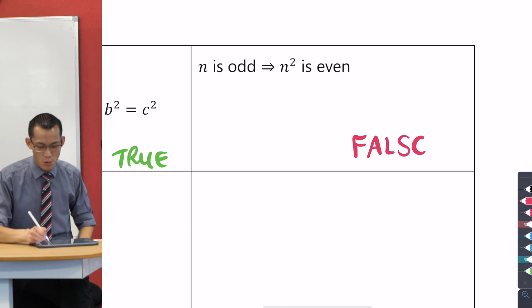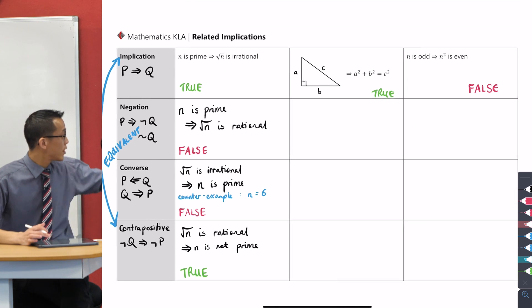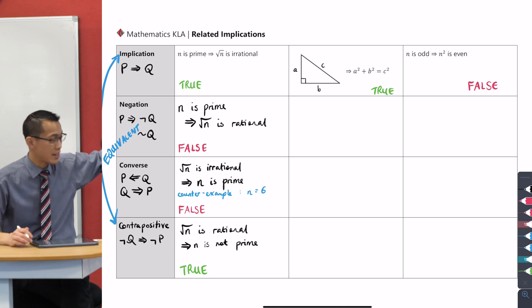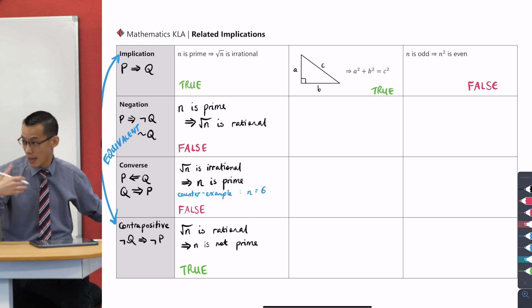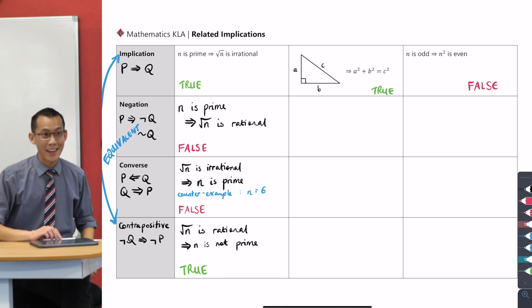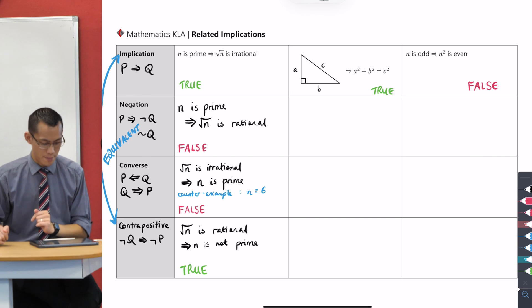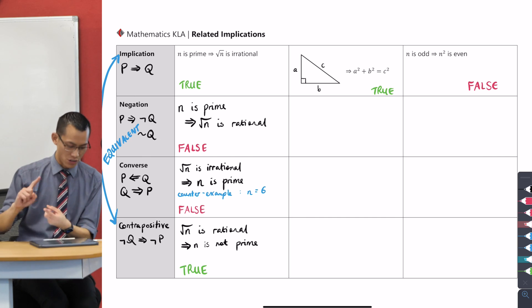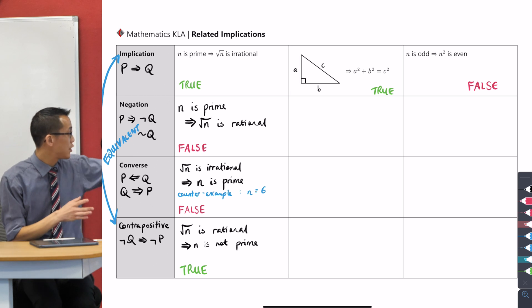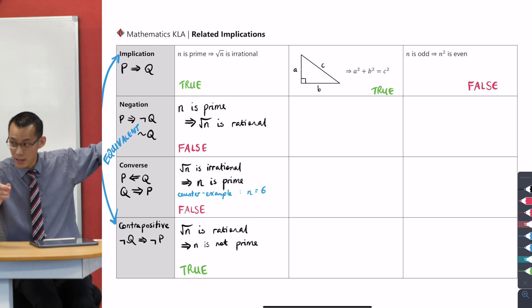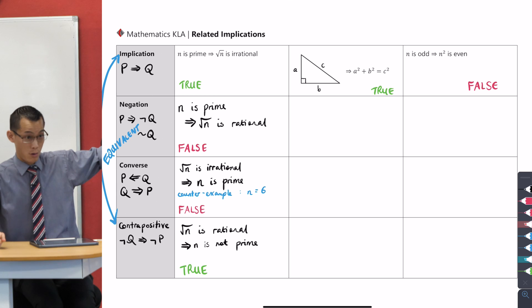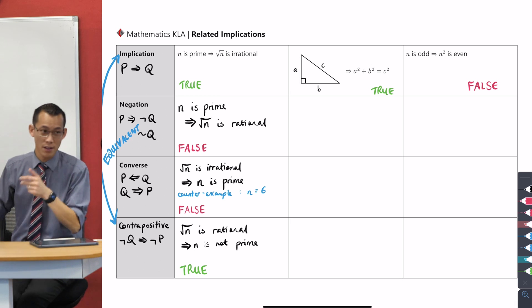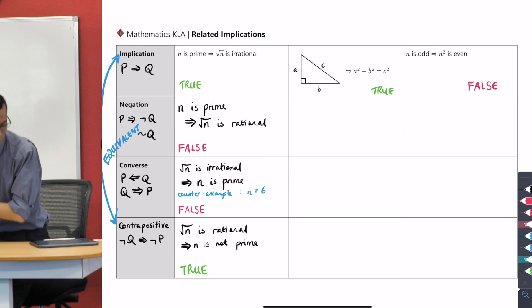But whether it's true or false, as you saw when we did the first example, it has implications for the negation, it has implications for the contrapositive, and so on. So here's what you're doing now for the next five to seven minutes: fill in what is the negation, converse, and contrapositive. Translate it for these particular examples, and then tell me whether they're true or false. If you've got questions or think you're finished, call Mrs. Lee right over. Off you go.